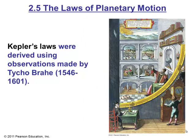This brings us to the laws of planetary motion. From here on, you are expected to study and understand this material — it is very important for the chapters that follow. Kepler's laws were derived using observations made by Tycho Brahe, shown here in his observatory at Uraniborg on the island of Hven in Denmark. Brahe lived between 1546 and 1601. His observations of the positions of stars and planets were the most accurate and complete set of naked-eye measurements ever made.